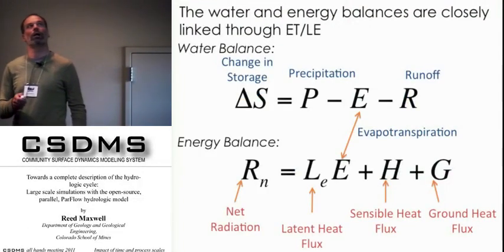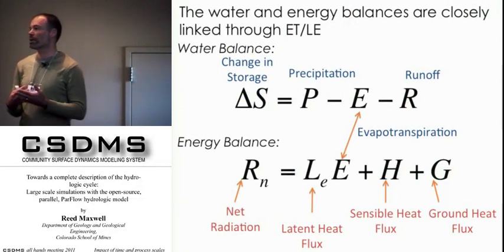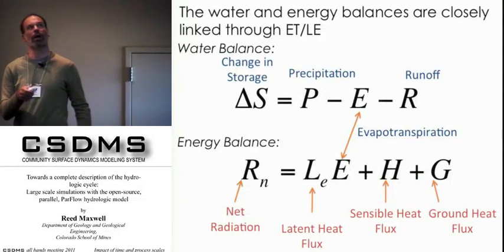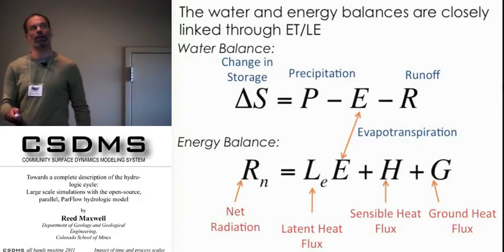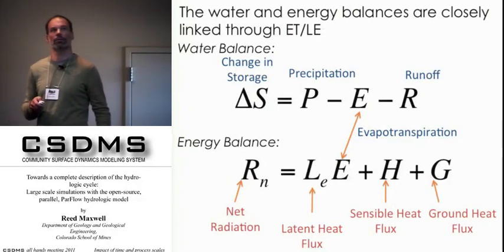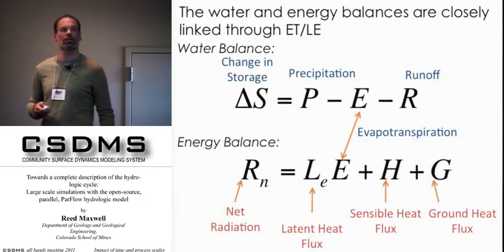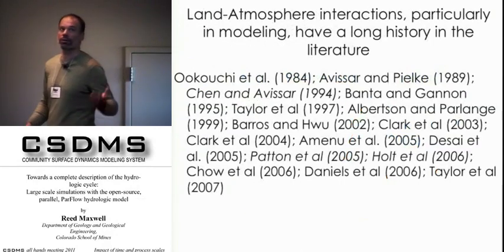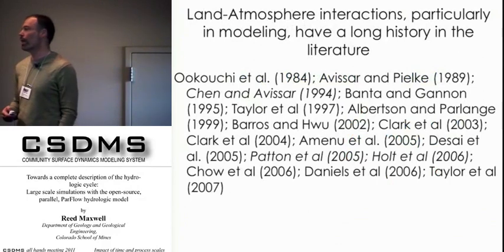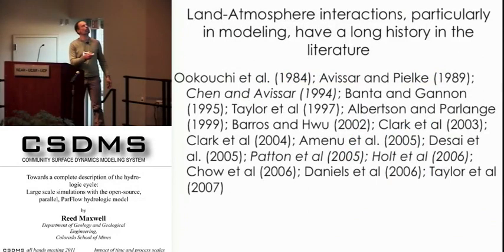My particular interests are understanding interactions between the land and energy budget. If we write these in a simplified way — looking at the change in terrestrial hydrology and the energy balance — we immediately notice that latent heat flux is one of the key variables shared between these two systems, and this is one of the key interactions. The atmospheric community has published extensively about this starting in the mid-1980s.